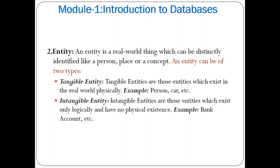What is an entity? An entity is a real world thing or object which can be uniquely identified, like a person, place, or concept. There are two types of entity: tangible entity and intangible entity. Tangible entities exist physically in the real world, such as a person, car, or customer. Intangible entities exist only logically with no physical existence, such as a bank account number.